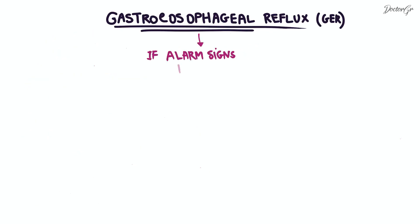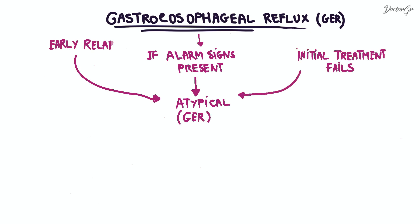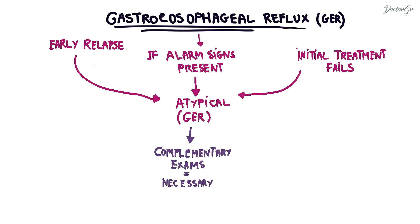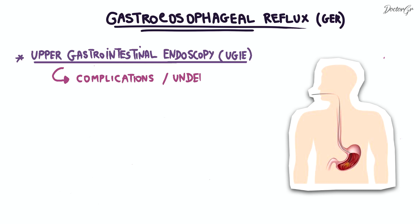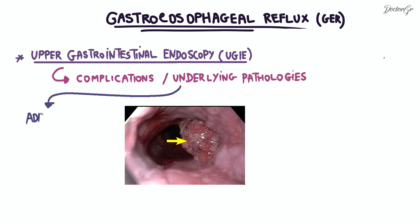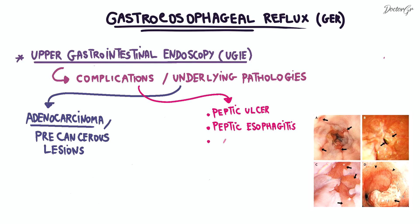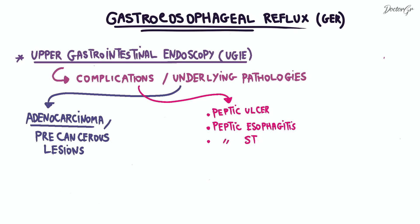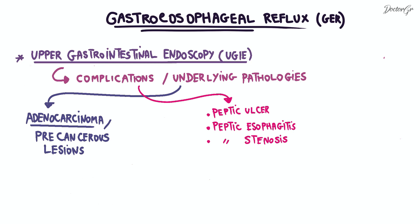In cases where alarm signs are present, the profile is atypical, or if the initial treatment fails or relapses, further complementary exams are necessary. In the first instance, an upper gastrointestinal endoscopy is performed to diagnose complications and search for underlying pathologies like adenocarcinoma or precancerous lesions. Among these complications, we have peptic ulcer or peptic esophagitis, which is an inflammation of the esophageal mucosa with a loss of substance. There is also peptic stenosis, which can cause an organic dysphagia, the most common complication of reflux.